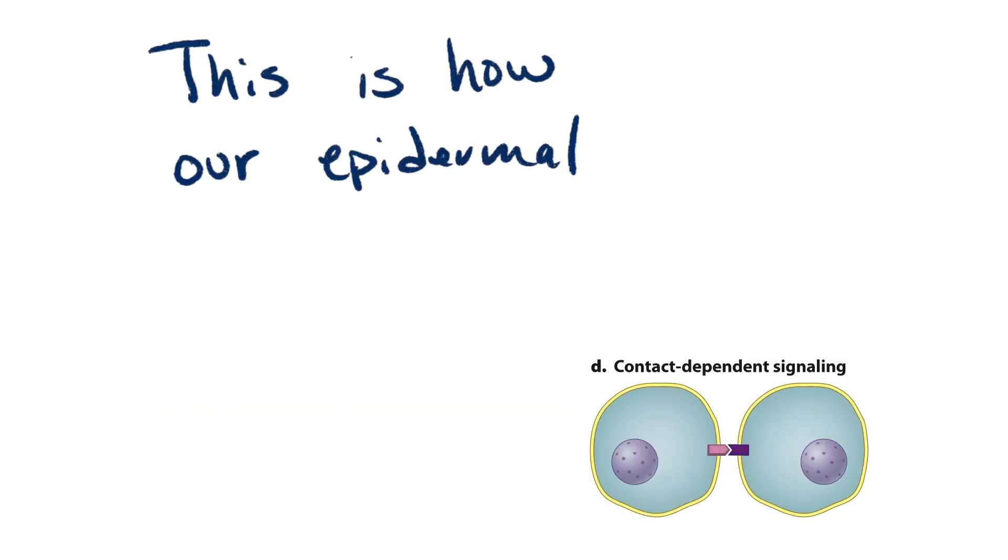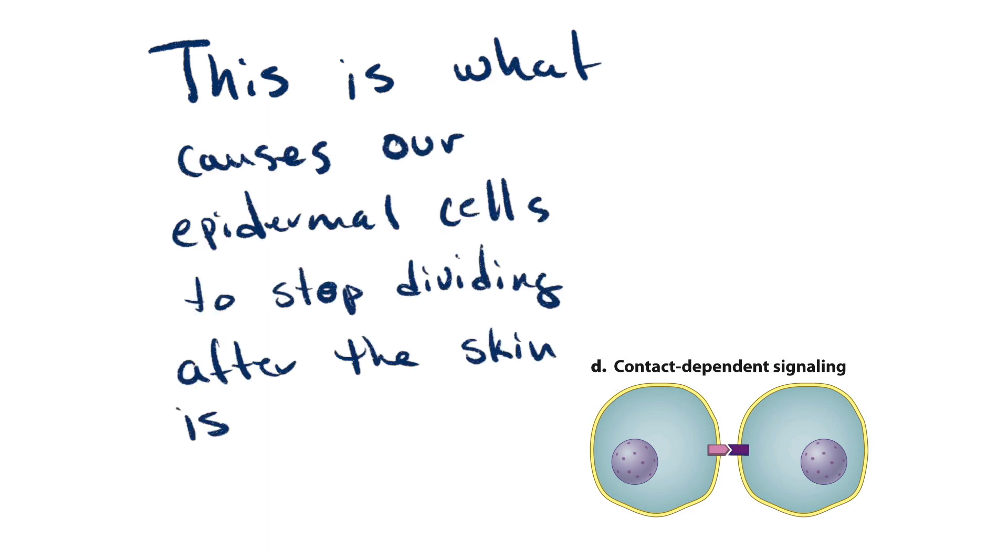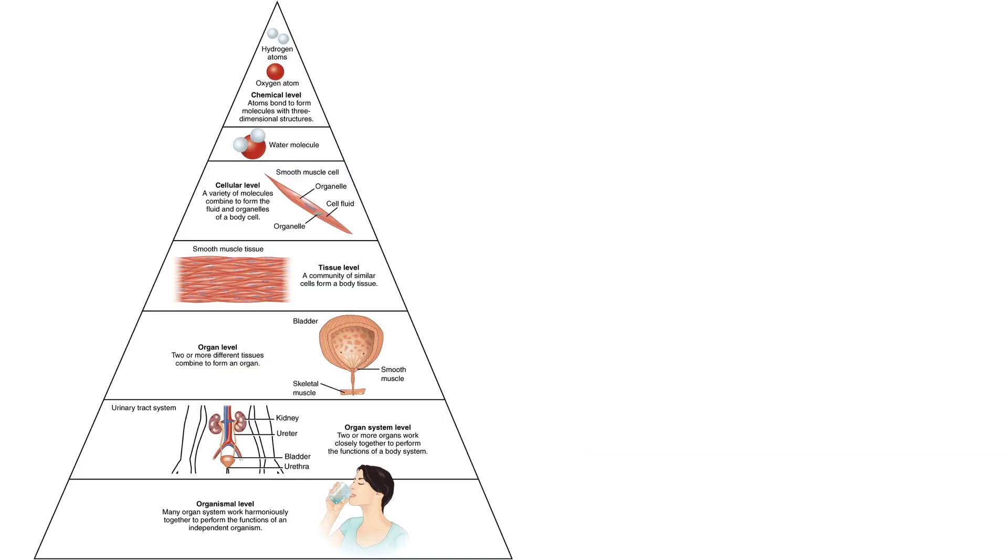Contact dependent signaling is what causes our epidermal cells to stop dividing after the skin has been damaged and repaired. All of these cell signaling processes work together.